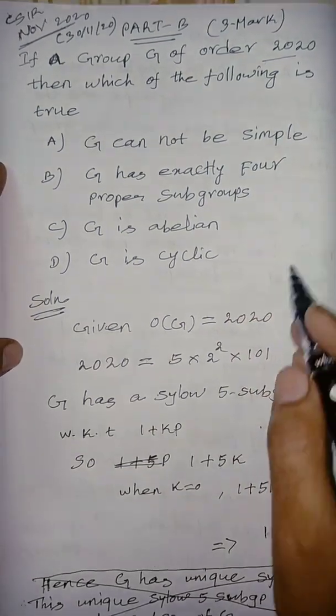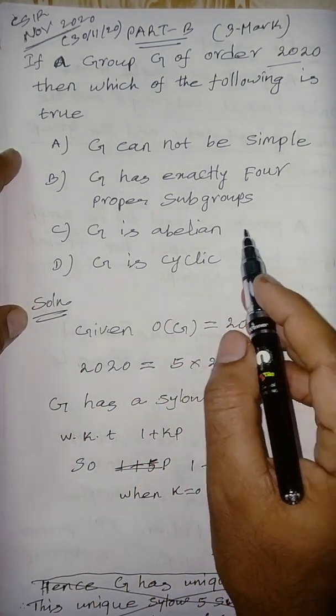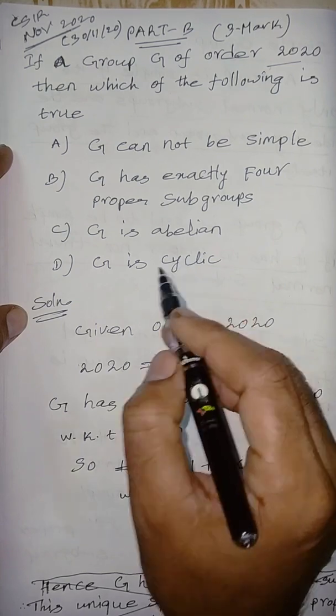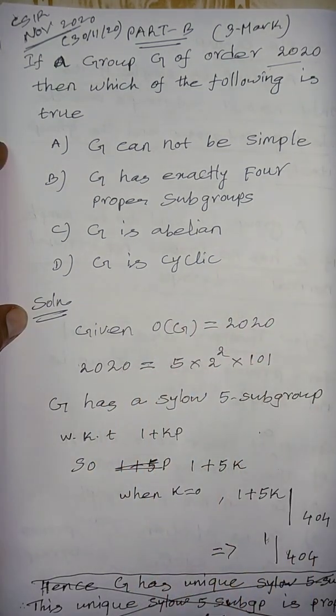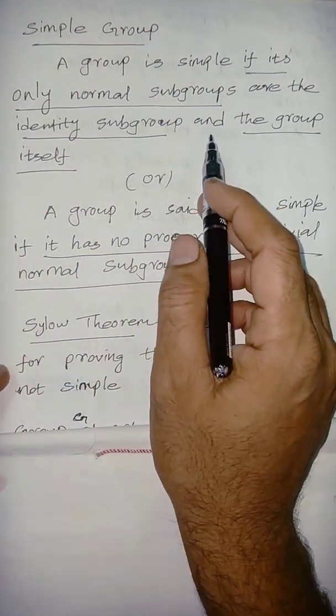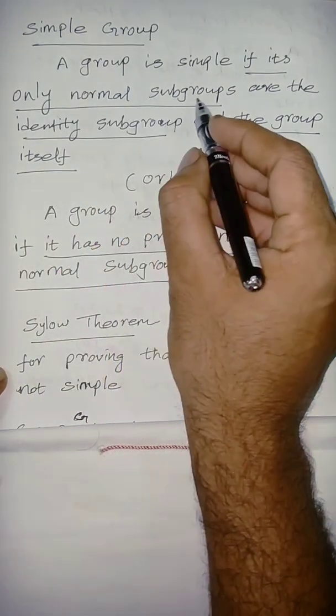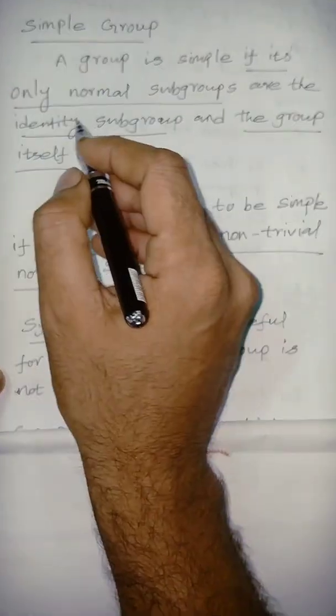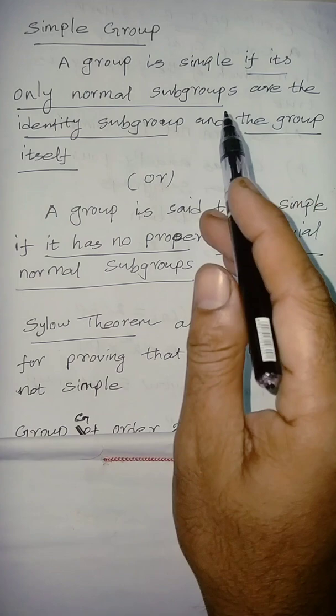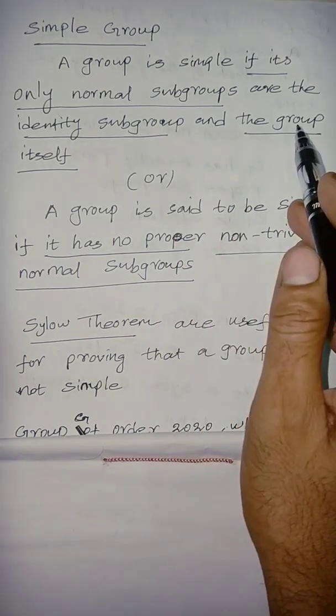Now before solving this problem, we should know about the simple group. We know about abelian and cyclic basically. What is the classical definition of a simple group? The group is simple if its only normal subgroups are identity subgroup and the group itself.